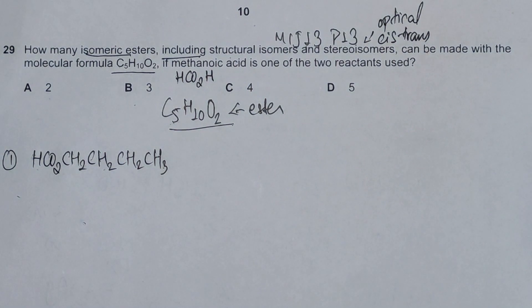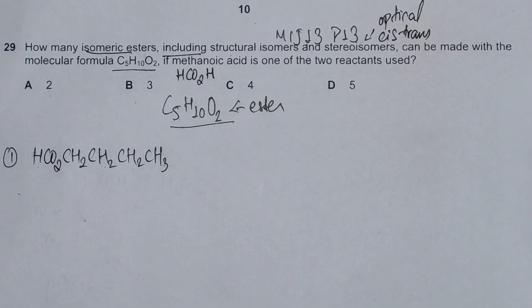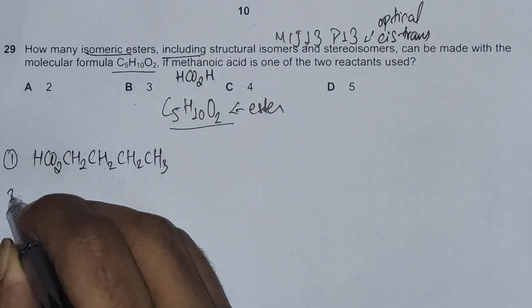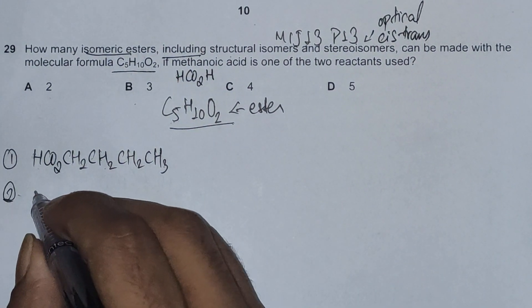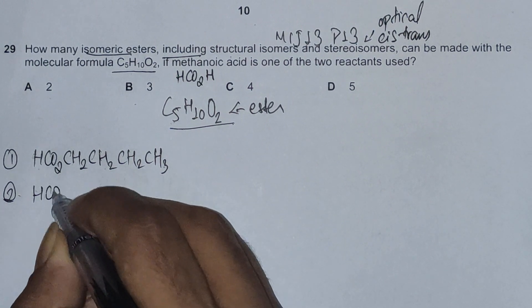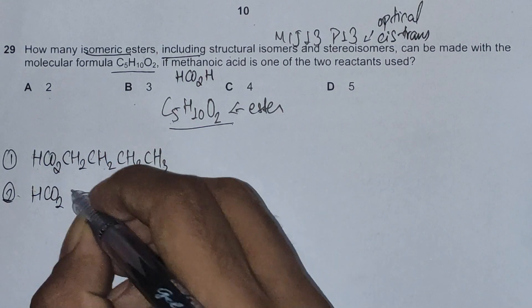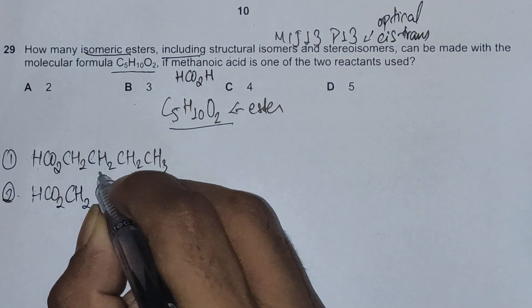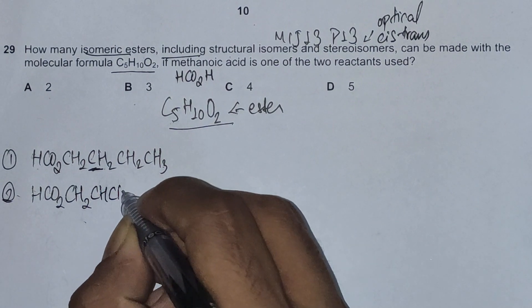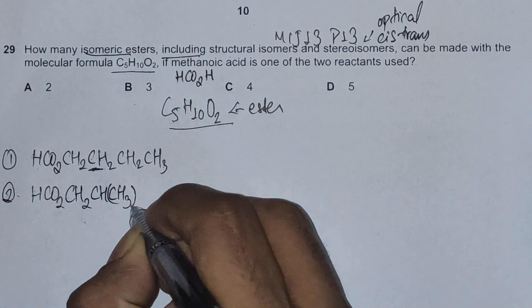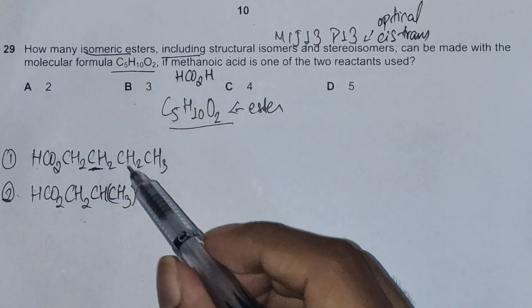Now the next are going to be chain esters with methyl groups attached, methyl or two methyl. The second one could be HCO2 - this will always be common - then CH2, and we could create an alkyl group for this carbon atom, the alkyl group being methyl groups: CH(CH3)-CH3. Counting: 3, 4, 5, 6, 7, 8, 9, 10 and 5 carbon atoms.